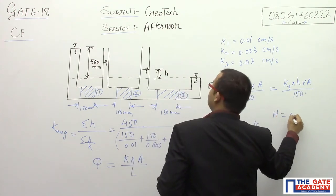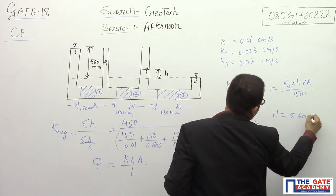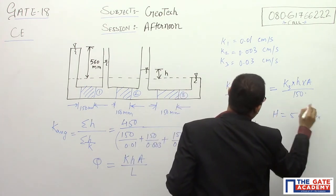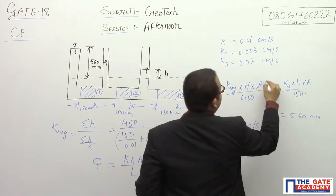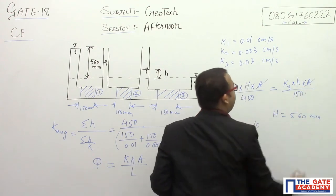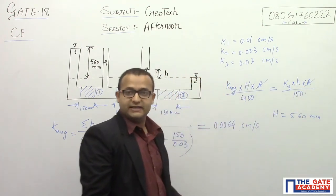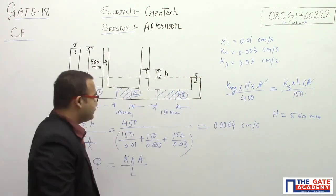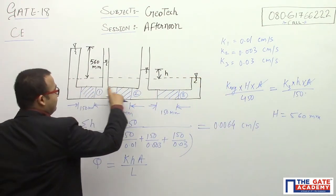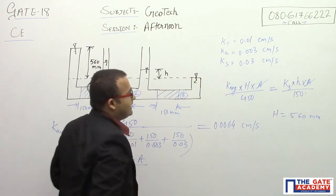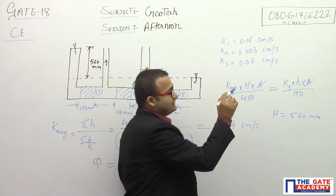Capital H is known — it is 560 mm. The cross-sectional area is the same for all the soils, so A cancels out on both sides of the equation.